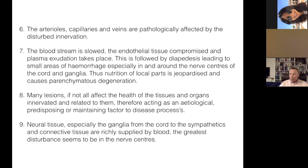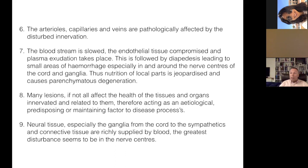Many lesions, if not all, affected the health of the tissues and organs innervated and related to them, therefore acting as an etiological, predisposing, or maintaining factor to disease processes. This demonstrated why Still, in his early days of osteopathy, was able to help people recover from more constitutional type maladies. Neural tissue, especially the ganglia from the cord to the sympathetics, is richly supplied by blood, and the greatest disturbance seemed to be in the nerve centers. McConnell's final conclusion: owing to the sensitivity of neural tissue to circulatory changes, it's a small step from functional impairment to organic disorder.